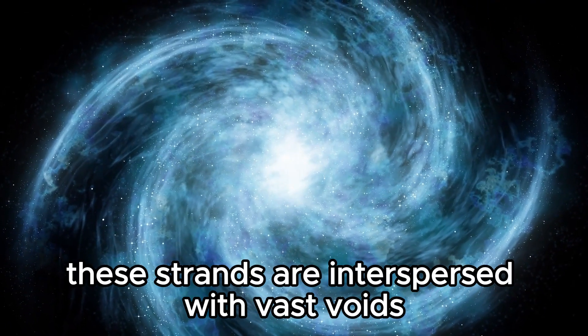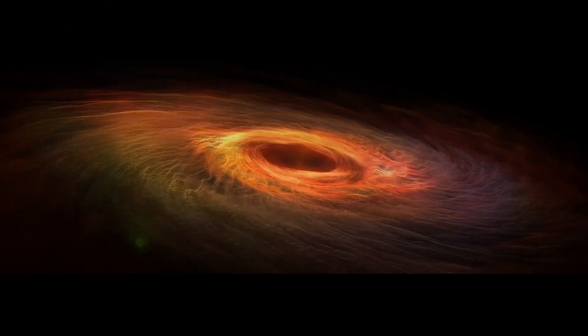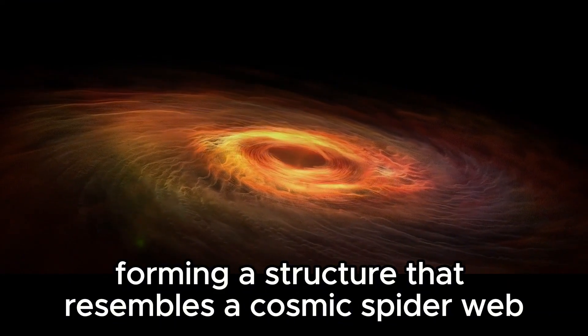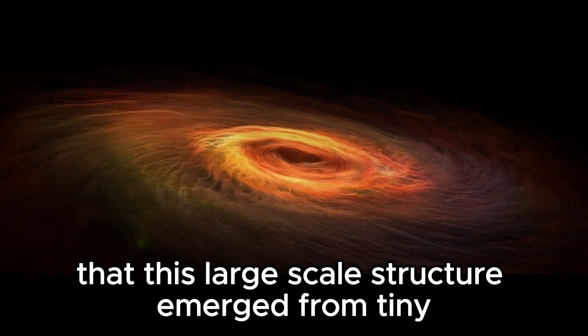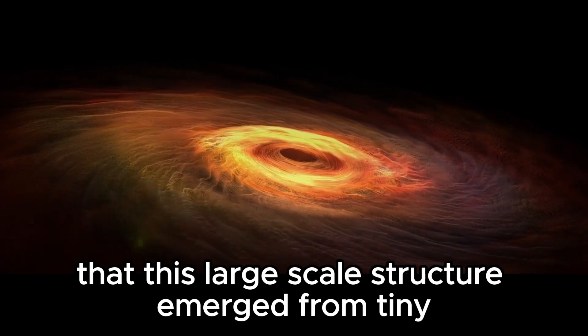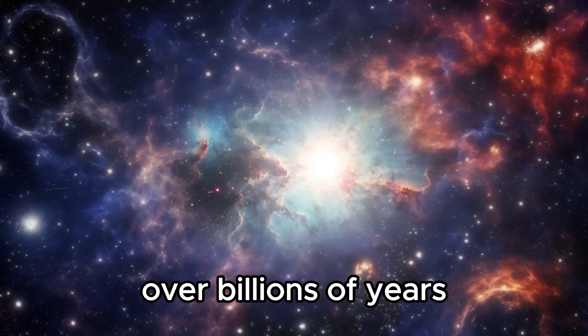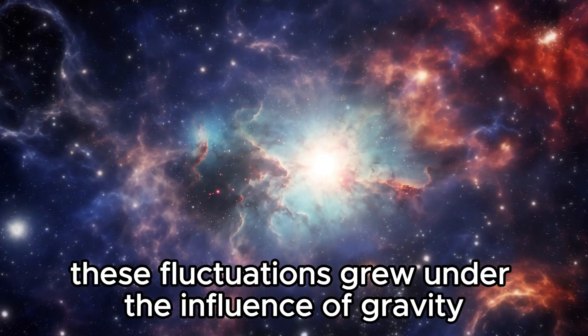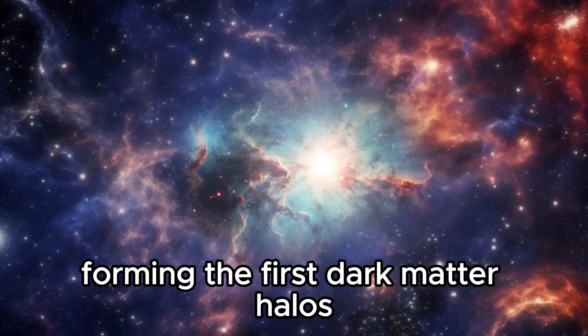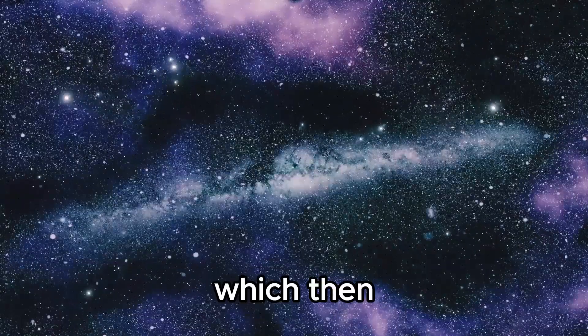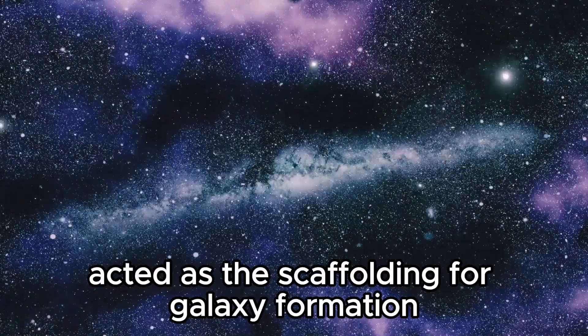This web consists of vast thread-like filaments composed of dark matter along which galaxies and galaxy clusters are strung like beads. These strands are interspersed with vast voids, forming a structure that resembles a cosmic spiderweb. The idea is that this large-scale structure emerged from tiny quantum fluctuations in the very early universe. Over billions of years, these fluctuations grew under the influence of gravity, forming the first dark matter halos, which then acted as the scaffolding for galaxy formation.